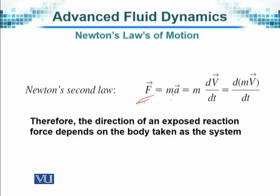Force is equal to mass into acceleration. Acceleration is the rate of change of velocity with respect to time, mathematically represented as D by DT of the quantity V. This can also be written as D by DT of M into V, because mass and velocity can be clubbed together — mass is a scalar quantity and it cannot be created or destroyed, therefore DM by DT will be zero anyway.